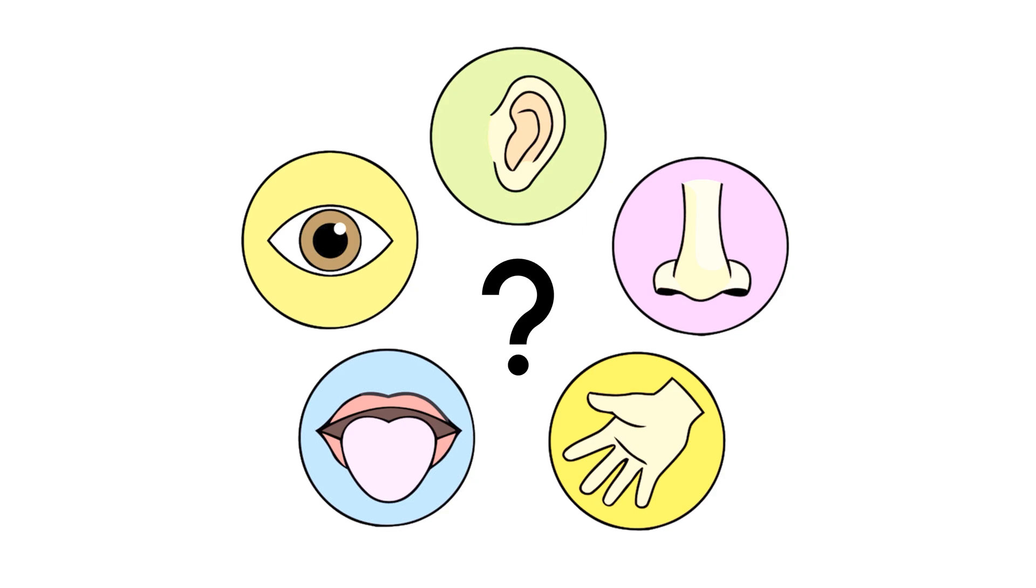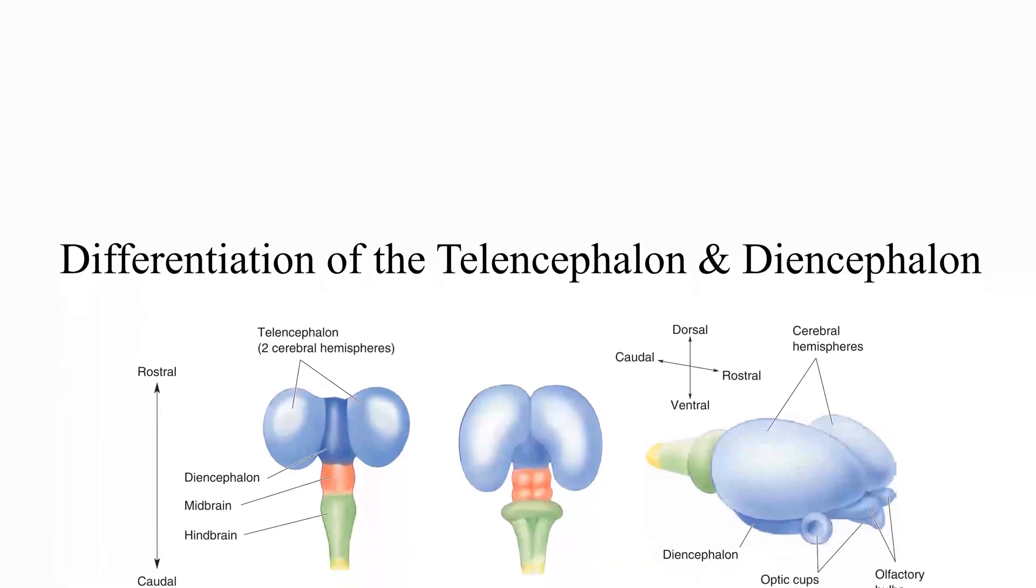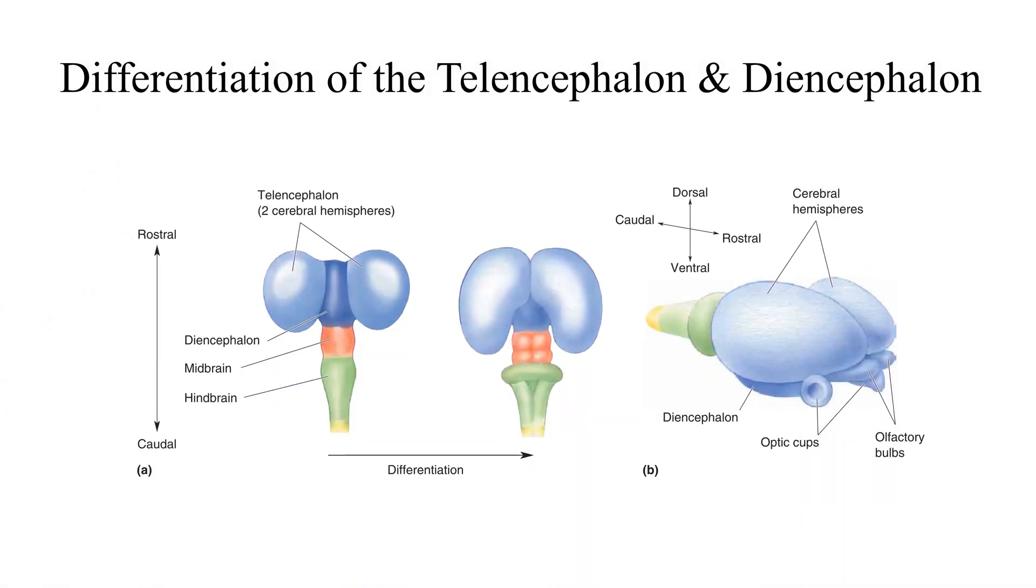Let's develop the second primary vesicle. The telencephalon continues to develop in four ways. Firstly, the telencephalic vesicles grow posteriorly so that they lie over and lateral to the diencephalon. Secondly, another pair of vesicles is sprouted off the ventral surfaces of the cerebral hemisphere, giving rise to the olfactory bulb and related structures that participate in the sense of smell. Thirdly, the cells of the walls of the telencephalon divide and differentiate into various structures. And finally, white matter systems develop carrying axons to and from the neurons of the telencephalon.